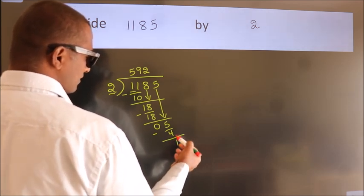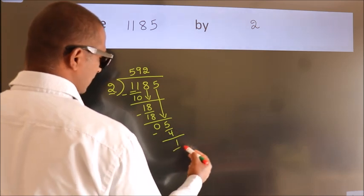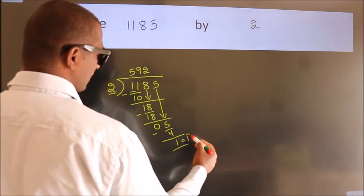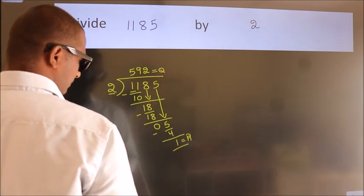After this, no more numbers to bring it down. So we stop here. This is our remainder. This is our quotient: 5, 9, 2.